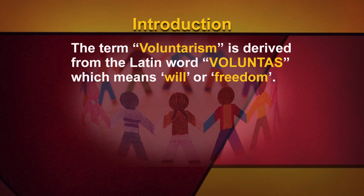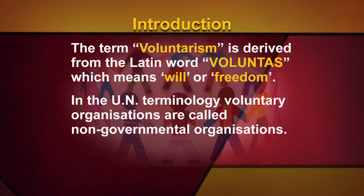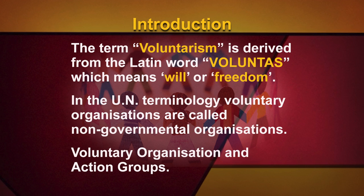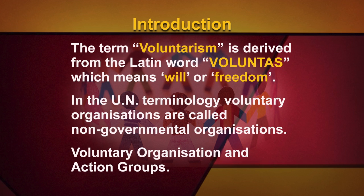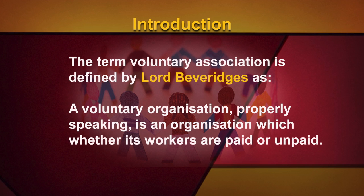The term voluntarism is derived from the Latin word 'Voluntis' which means will or freedom. In the UN terminology, voluntary organizations are called non-governmental organizations. These are also identified as voluntary organizations and action groups. The term voluntary association is defined by Lord Beveridge as: a voluntary organization, properly speaking, is an organization which, whether its workers are paid or unpaid.